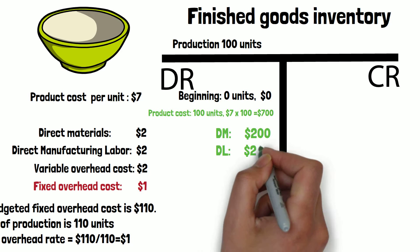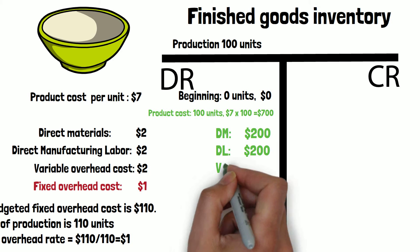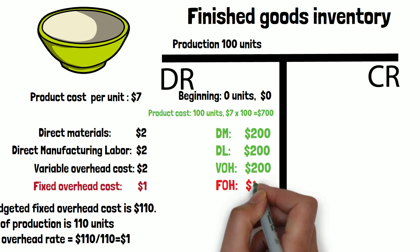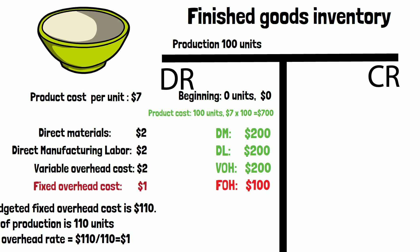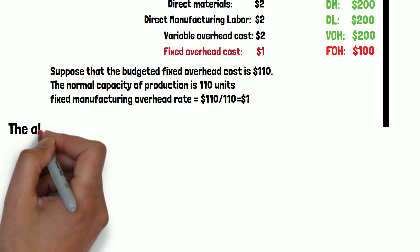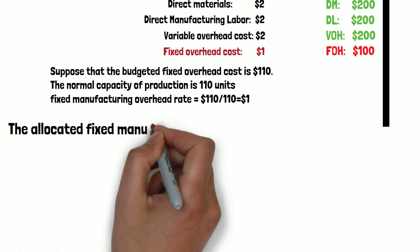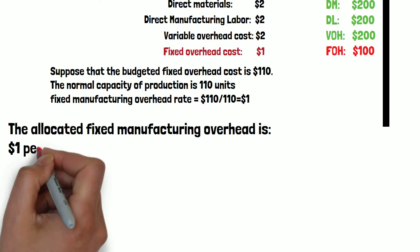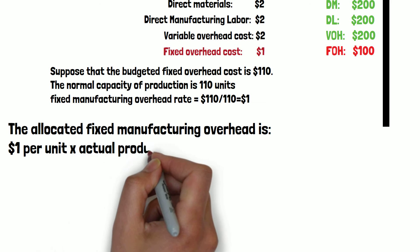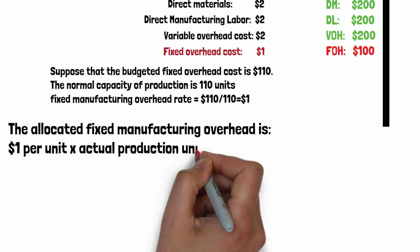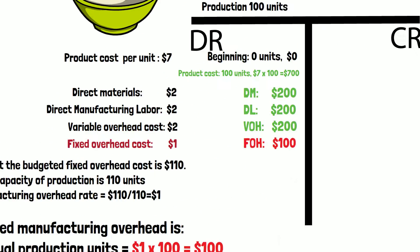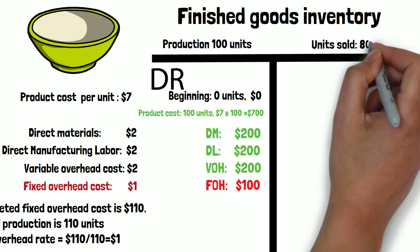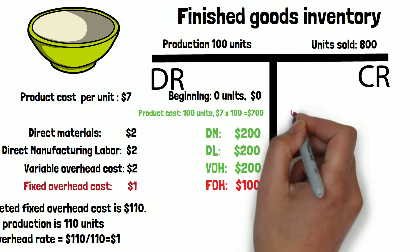So the production cost would be $700 in total, because it's $7 per unit. This includes direct materials $200, direct labor $200, variable overhead $200, and fixed overhead $100. So the allocated fixed manufacturing overhead is $1 per unit times 100 actual production units, which equals $100.